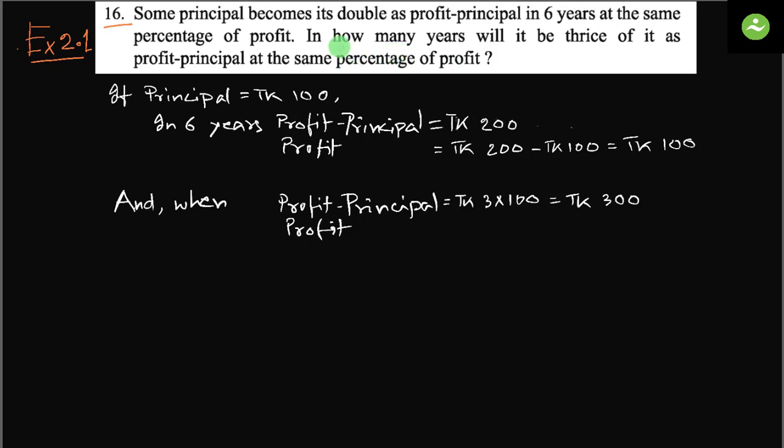The answer to the question is how many years. We have to find out the number of years it takes to make the principal thrice, three times. Let us assume the principal is Taka 100.